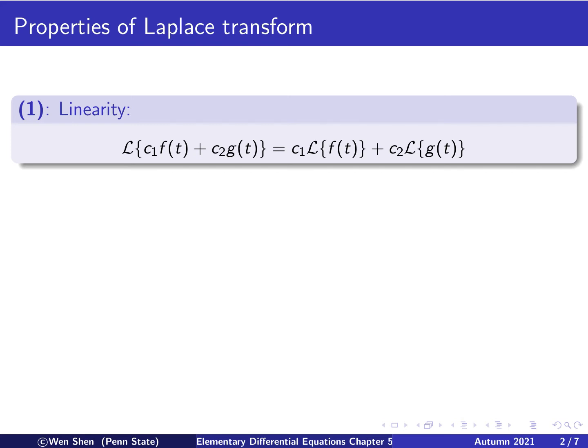The first property is linearity of the transformation. The Laplace transform of a constant c1 times a function f(t) plus a constant c2 times a function g(t) will equal — you can break this up into two Laplace transforms and pull out each constant outside the Laplace transform. This is the standard linear property.